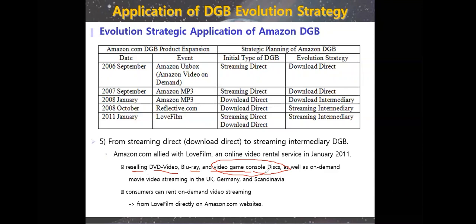Their fifth strategy took them from streaming direct and download direct to streaming through an intermediary — that is, through a third party — while also offering their own streaming. These were a few examples of how Amazon followed different strategies in different years.